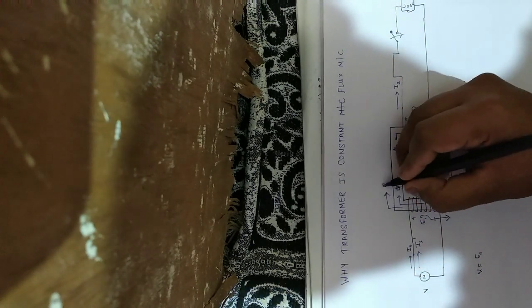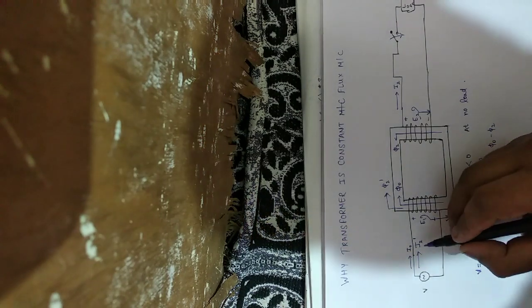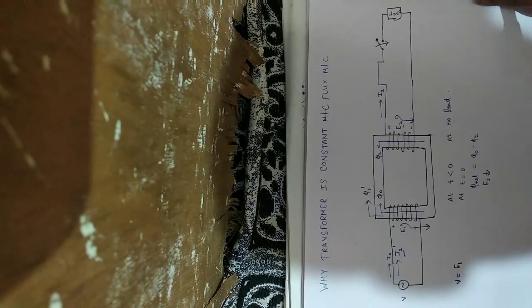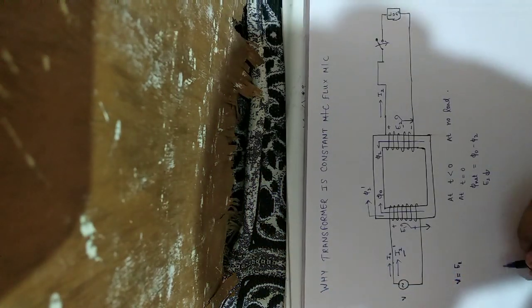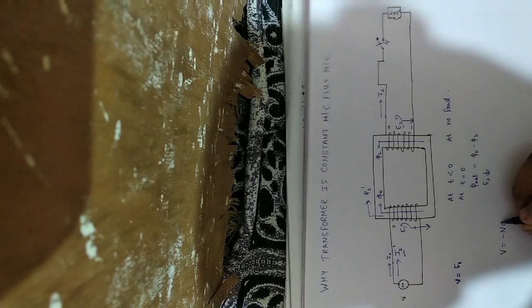Some flux phi2 dash is also here, so that this v is equal to e1. This much amount of phi2 dash current will be here. V according to Lenz's law is v equals minus n d(phi)/dt.